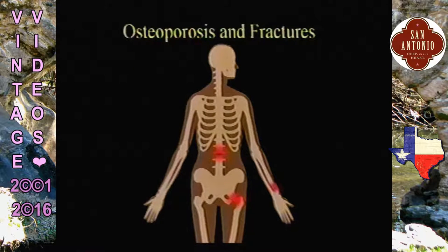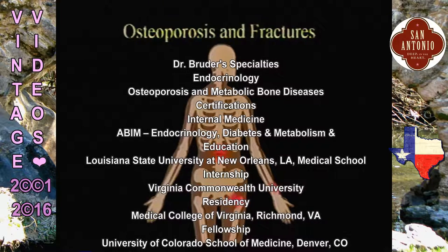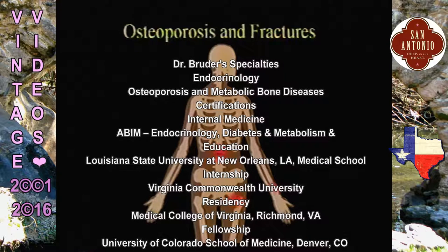It's a disease that's asymptomatic prior to fractures — you don't know you have it until you break something. This is comparable to blood pressure: you don't know you have high blood pressure until you have a stroke, you don't know you have high cholesterol until you have a heart attack. So we really need to determine who's at risk so we can intervene in the prevention of fractures. The most common sites include the spine, the hip, and the forearm.